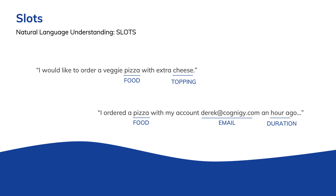Dates, for example, can be expressed as tomorrow, Friday, the 23rd, or next week, and they all mean the same thing. These conceptual or pattern-based slots are built into Cognigy. The domain-specific ones may be unique to your business — whether you're an airline, an auto parts manufacturer, a pharmaceutical company, or a pizza restaurant, you have product names and business processes that are particular to you.